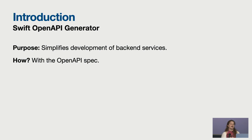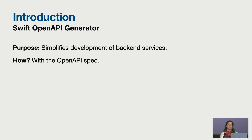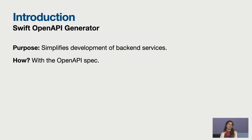The Swift OpenAPI generator is a powerful tool that can simplify API development. It uses OpenAPI specifications, which is a standard for defining APIs in a machine-readable way. This allows us to describe operations and parameters of an API in a consistent way, which can then be used by the Swift OpenAPI generator to generate client libraries and also service stubs.